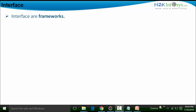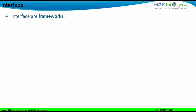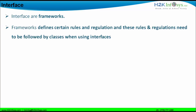Now, what does an interface contain? It contains constants, which are nothing but global variables with constant values. And it contains abstract methods. So a framework defines rules and regulations, and these rules and regulations need to be followed by classes when using the interface. When a class wants to implement an interface, the class has to follow those rules and regulations defined in the interface.